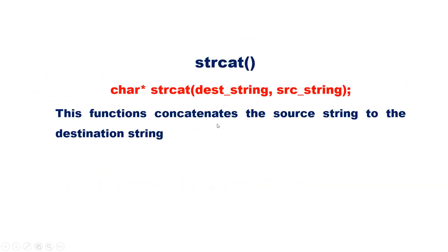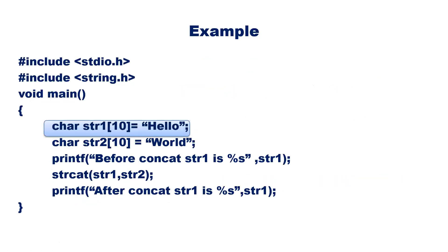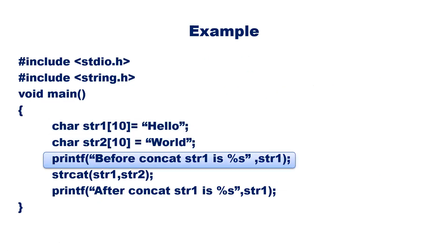The next one is strcat. The function concatenates the source string to the destination string. The length of the destination string must be greater than the source string, because it copies the content of the source string to the end of the destination string. For example, str1 is equal to "hello" and str2 is equal to "world".